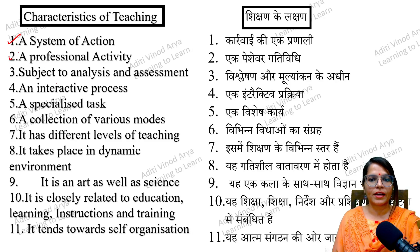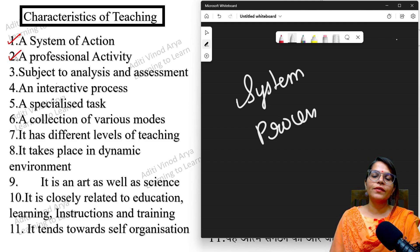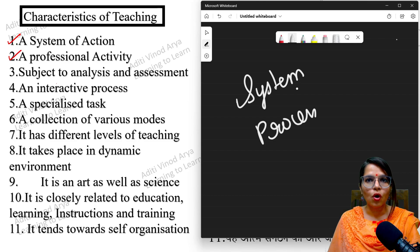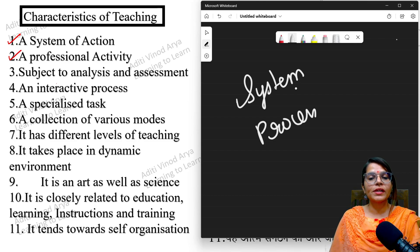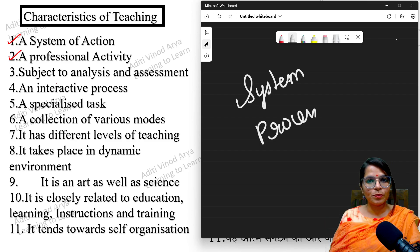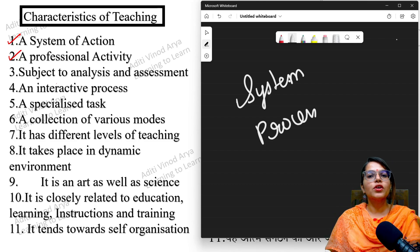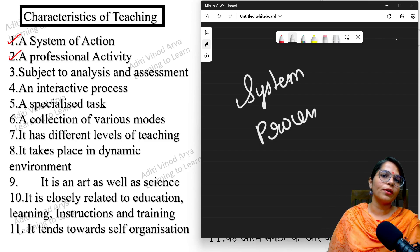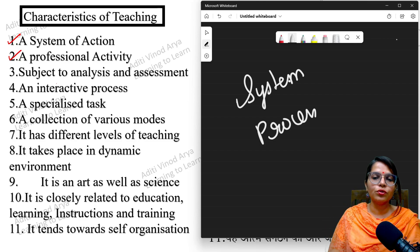The next characteristic is that teaching is a professional activity. A professional activity is something where a person has a certificate or is professionally capable of doing that activity. For example, if you have completed your MBBS then you are a certified doctor and allowed to treat patients. Professionalism comes with a particular degree, your education, research, and knowledge — it is completely related to your certification and qualification.